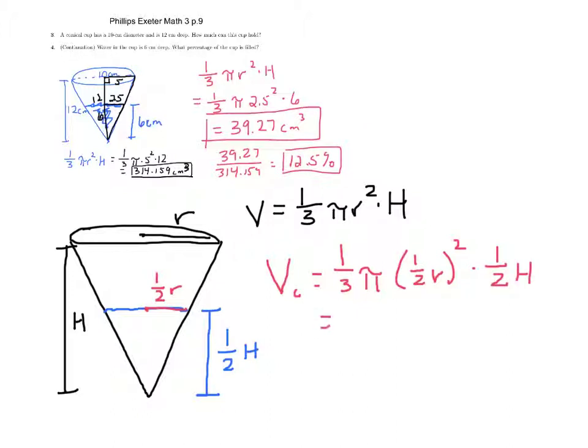And we can simplify this out just a bit, one-third pi times one-fourth R squared times one-half the height. Now, this ends up being one-third times one-fourth times one-half is what? One-eighth, now that sounds familiar, pi R squared times H.